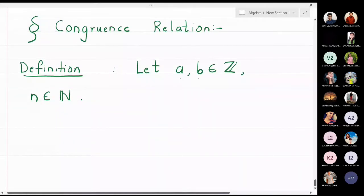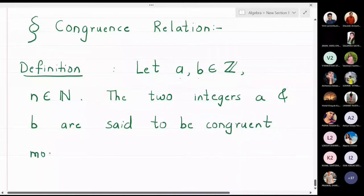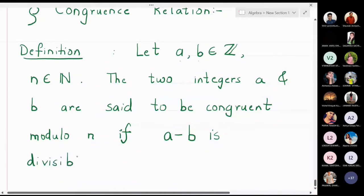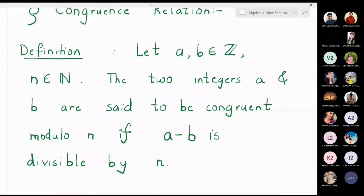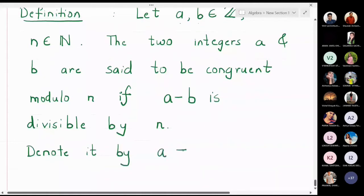The two integers a and b are said to be congruent modulo n if a minus b is divisible by n. So I will take the difference of the two numbers and check whether this difference is divisible by the given number n. If yes, then I will say that a is congruent to b modulo n.